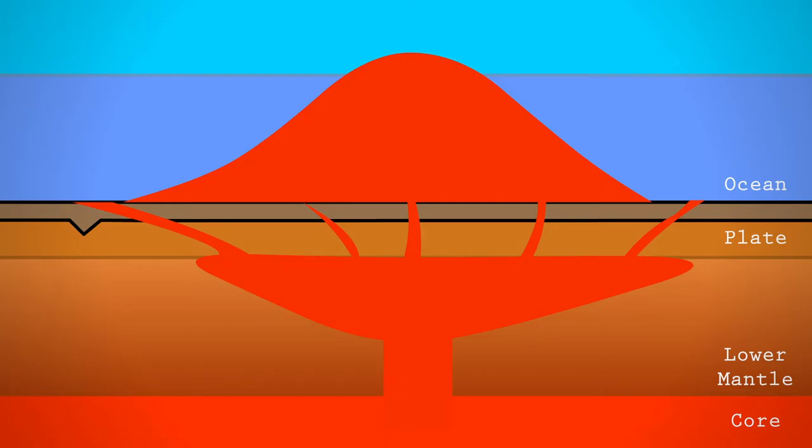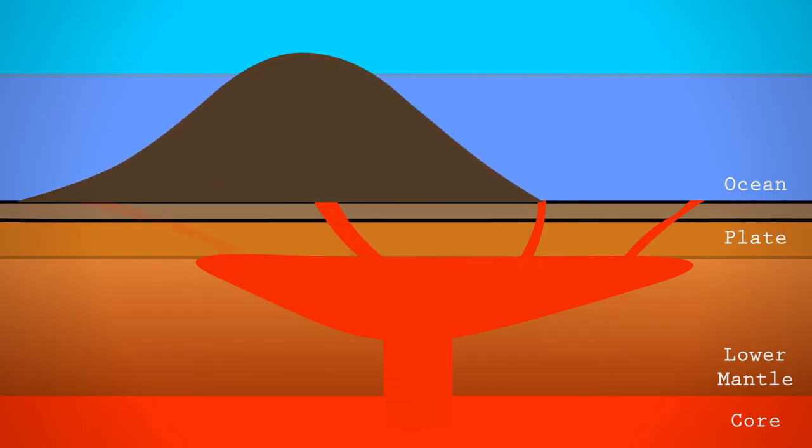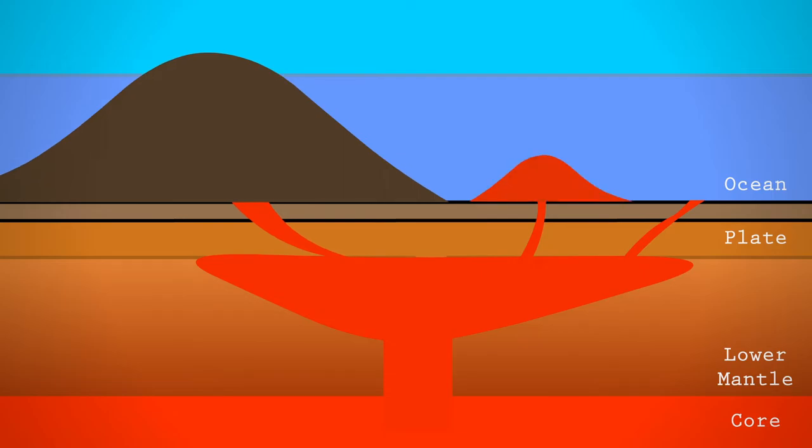This creates a situation where a hot spot in the middle of an ocean can suddenly erupt, make some land, have the plate above it move, and then erupt again. After multiple eruptions, you might get something like, say, Hawaii.